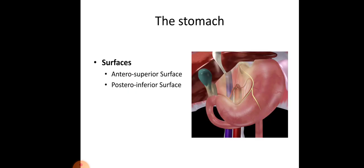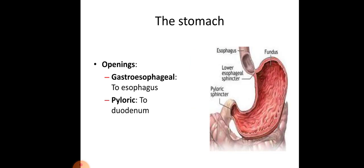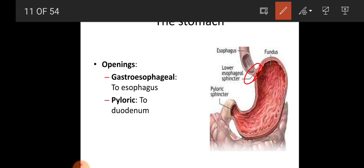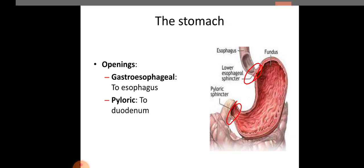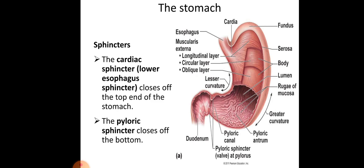Now the surfaces of the stomach: there are two surfaces — anterior superior and posterior surfaces. There are also two openings in the stomach: the gastroesophageal opening leading to the esophagus, and the pyloric opening leading to the duodenum. There are two sphincters in the stomach; these are the gatekeepers which guard the entry and exit of substances into and outside the stomach.